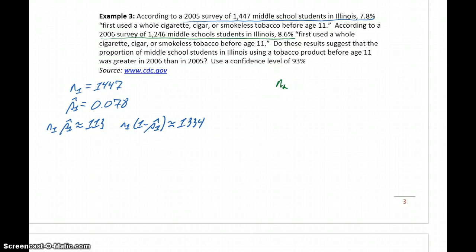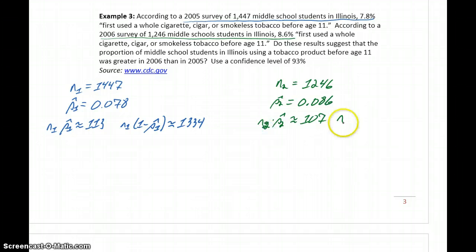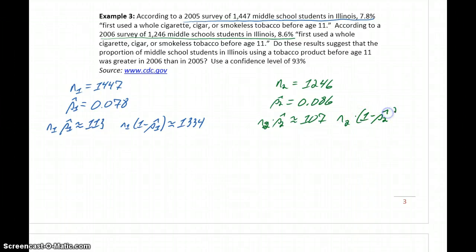For the second sample in 2006, we had a sample size of 1,246 students and a sample proportion of 0.086. We had 107 successes, and n2 times (1 minus p2-hat) gives us approximately 1,139 failures. So we have enough successes and enough failures.